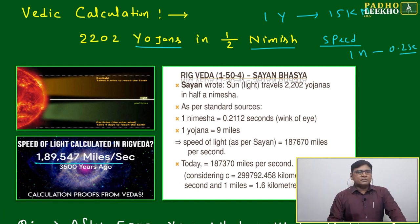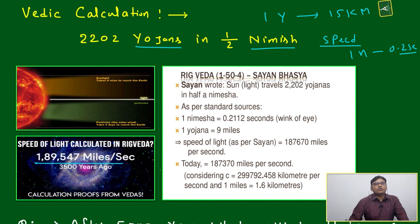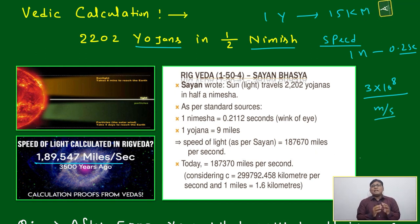Now how much is it? We find this value - 1,89,547 miles per second. We can convert it to any units we know. This is very popular: 3 into 10 to the power 8 meters per second. This is the speed of light.